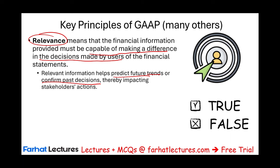What does that mean? If I predict sales to increase by 10%, how do I know this? I see that this company's sales is increasing 10% year over year from their accounting information — this information becomes relevant. Then I can predict that their future sales will increase by 10%; it helped me predict the future. If the sales did increase by 10%, it confirmed my past decision. Therefore, accounting provides relevant information that's going to help me make a better decision. That's one feature of GAAP.